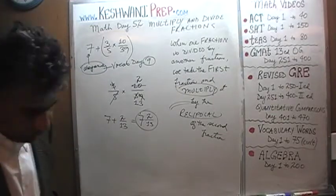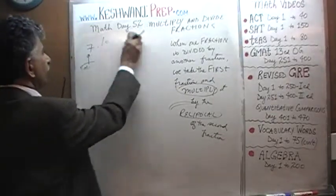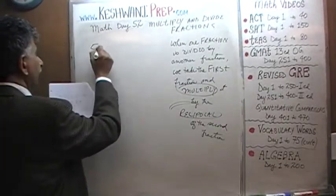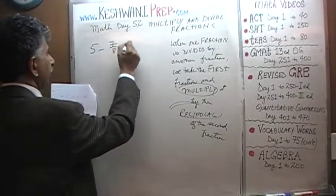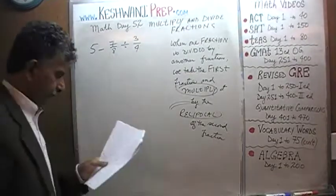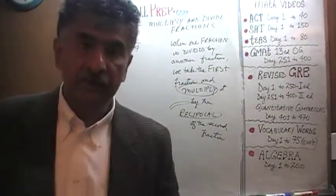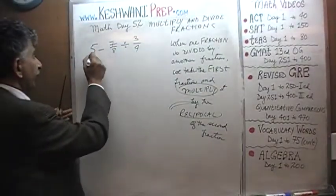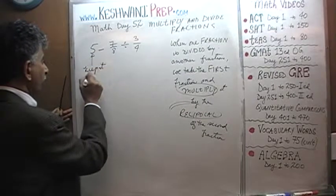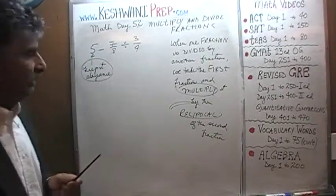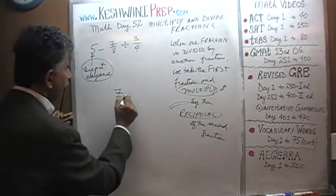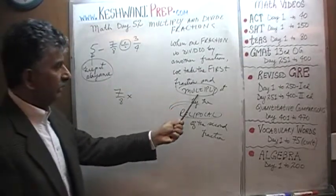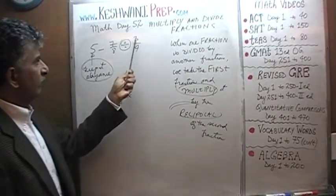Number 4 is: 5 minus 7/8 divided by 3/4. Same exact logic, same method, same rationale — nothing changes. We are going to keep the 5 in abeyance — keep it aside, we will deal with it later. Let's focus on 7/8 divided by 3/4: take the first fraction and multiply it by the reciprocal of the second fraction. 3/4 is going to become 4/3.